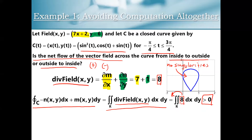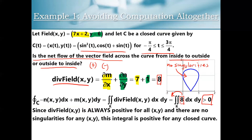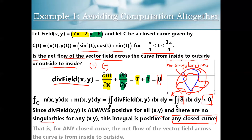We just need to write a little justification: since the divergence is always positive for all x and y, and there are no singularities in our region, this integral is positive for any closed curve. It doesn't matter if it's this teardrop shape or a circle or any other curve. For any closed curve in this problem, the net flow of the vector field across that closed curve is going to be from inside to outside.